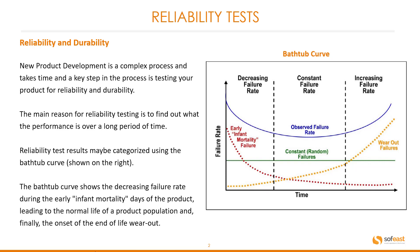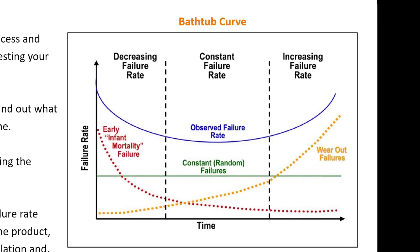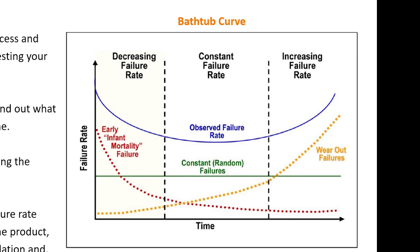Reliability test results may be categorized using the bathtub curve shown on the right. The bathtub curve shows the decreasing failure rate during the early infant mortality days of the product, leading to the normal life of the product population, and finally the onset of the end-of-life wear out. You can see the decreasing failure rate section, the constant failure rate, and the increasing failure rate. The blue curve is the bathtub shape.